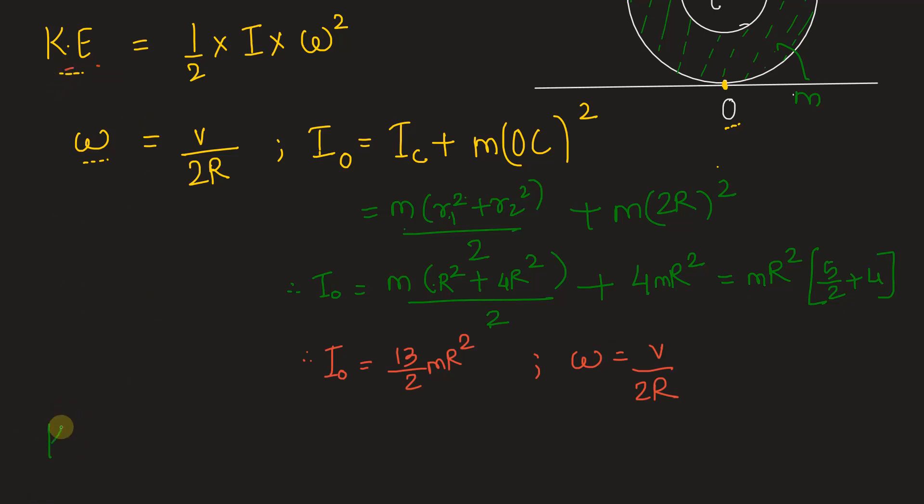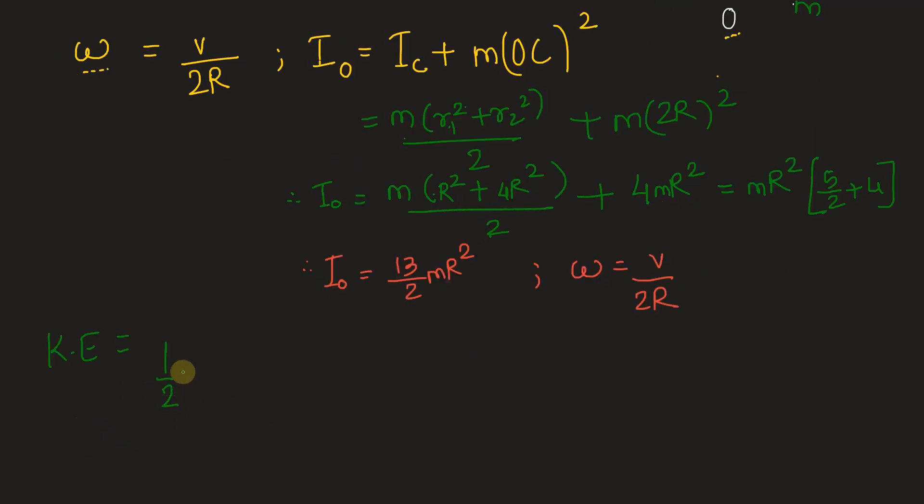So, we have kinetic energy is equal to half into IO that is 13 by 2 mR square into omega square that means we have v by 2R whole square. Don't forget to take this or you may get the wrong option as the answer.